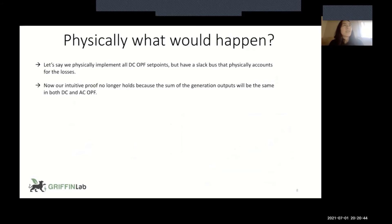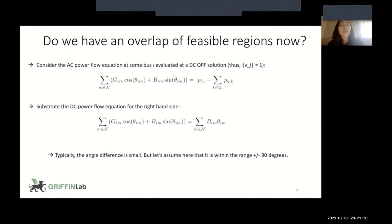Physically, what would happen? So let's say we solve DCOPF. We implement, we send all the generators their set points. They start outputting that power. But we have one slack bus, or maybe multiple. Maybe there's a distributed slack bus, or maybe there's fictitious load that's artificially increasing generation at the bus. And now, for some reason, we have a situation where the sum of the generation is the same in ACOPF and DCOPF. So we can't use our easy proof from the last slide. So if the sum of the generation is the same, now do I have an overlap of the DCOPF and ACOPF feasible regions? So let's take a look at this. And I know I'm going really fast, but I want to make sure I don't go over, because that is annoying for viewers.